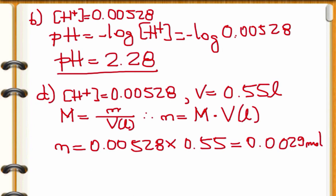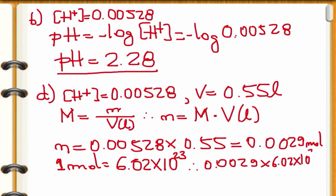This is the number of moles, but the question is the number of ions. We know that one mole has 6.02 times 10 to the power of 23 ions. Therefore, we can multiply 0.0029 times 6.02 times 10 to the power of 23. And that would give us 1.75 times 10 to the power of 21 H plus ions.